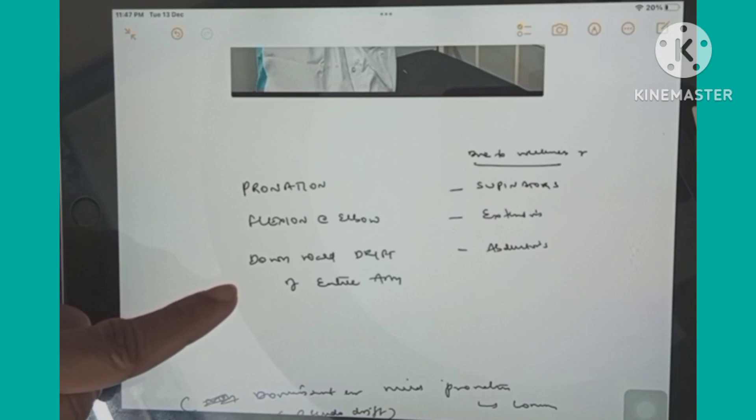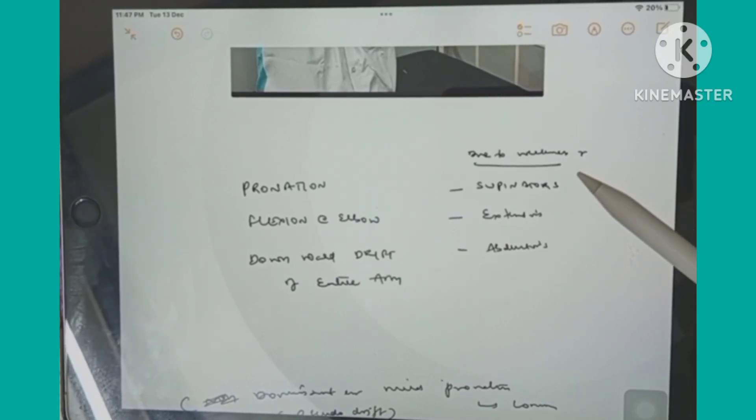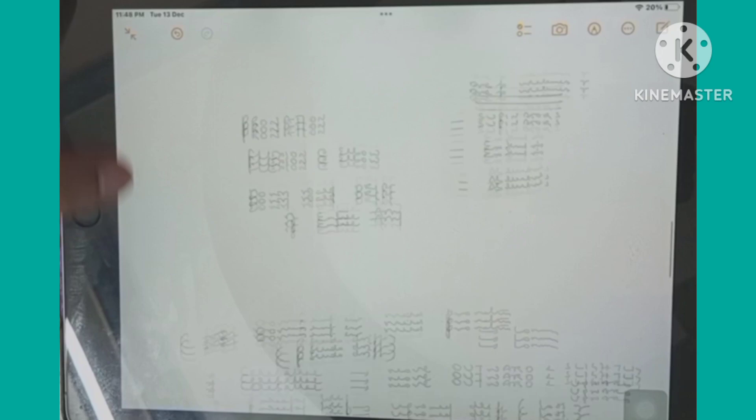So what we can see in the pronator drift: there will be pronation and flexion at elbow and downward drift of the entire arm. Why is there pronation? Because of weakness of supinators. Why flexion? Because of weakness of extensors. Why downward drift? Adductor weakness.